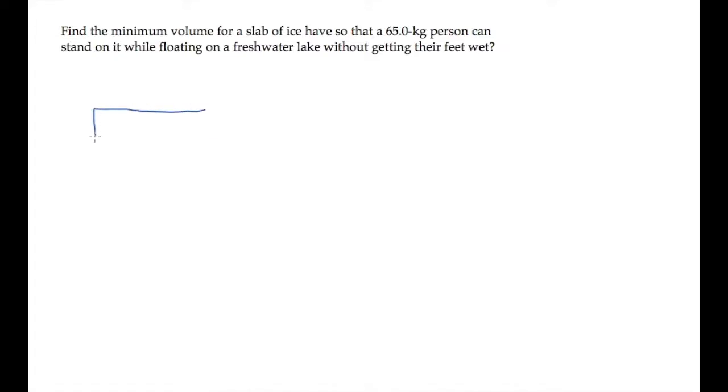The slab of ice in this problem has a volume, V, that we're asked to find so that a 65-kilogram person standing on it doesn't get their feet wet. And what that means is that the slab will sink so that it is exactly at the level of the water that it's floating in.